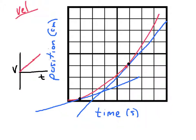The slope of this position-time curve is increasing — it is getting steeper. If the slope of that graph is velocity, then our velocity is getting bigger as time goes on: larger velocities as time increases. That's the connection between a position-time graph and a velocity-time graph.